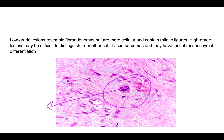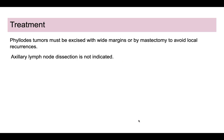At the low end, a low-grade phyllodes tumor can resemble fibroadenoma but will be slightly more cellular. At the high end, a malignant phyllodes tumor can be very difficult to distinguish from other soft tissue sarcomas. This represents the full spectrum in which phyllodes tumor can present.